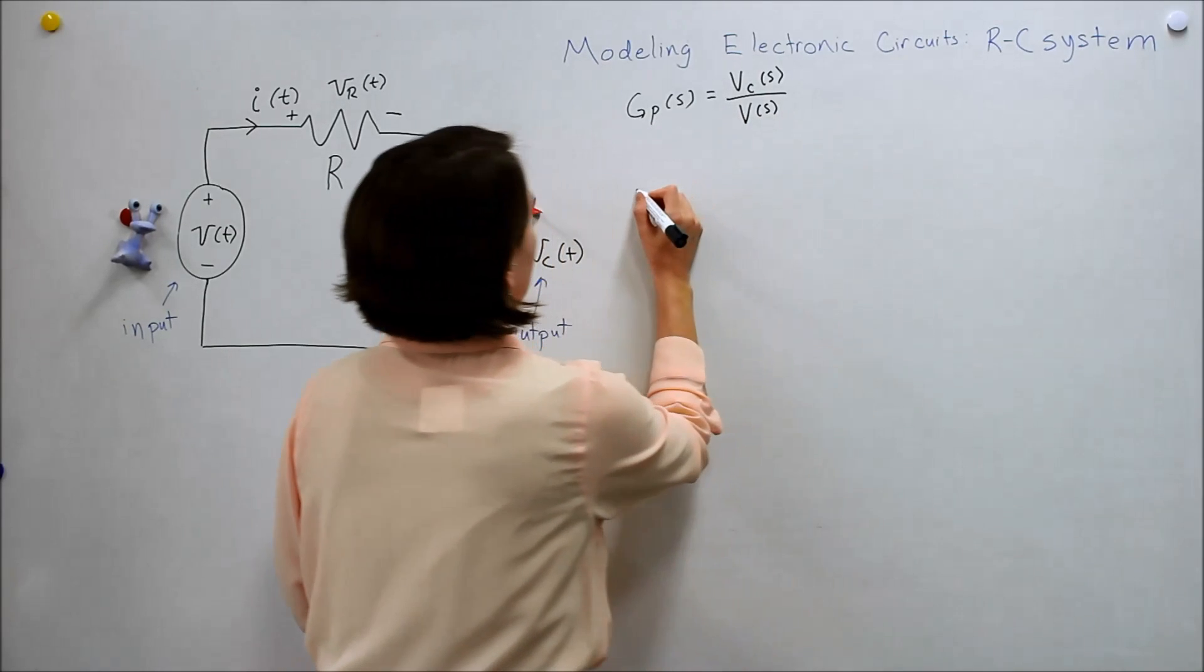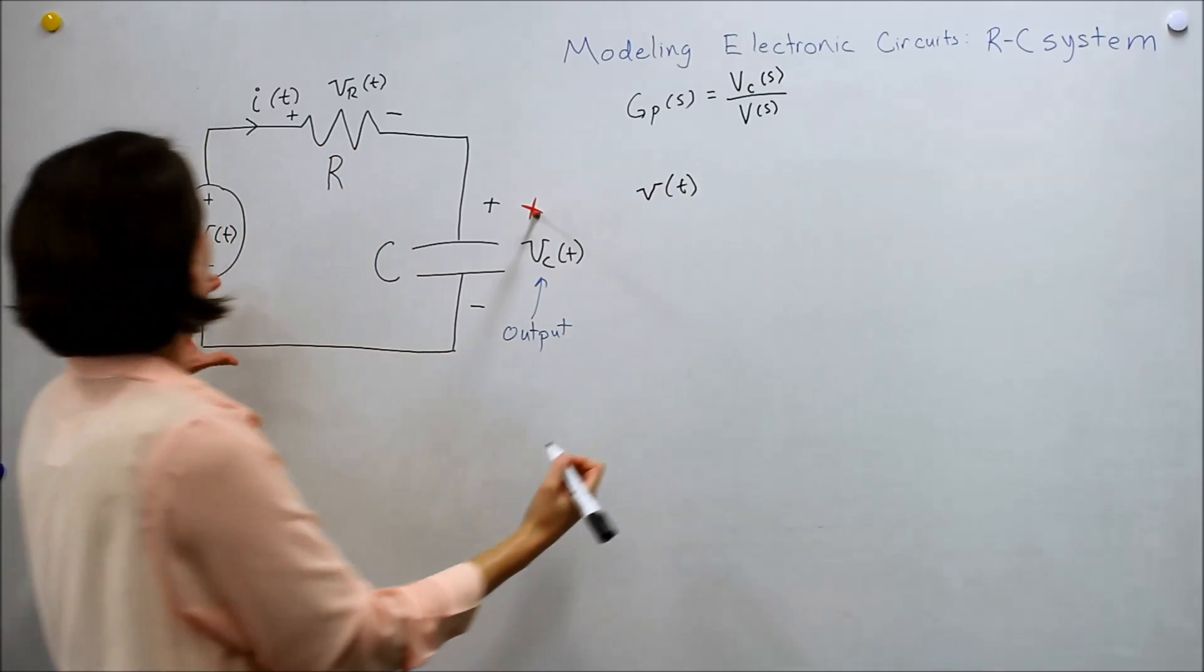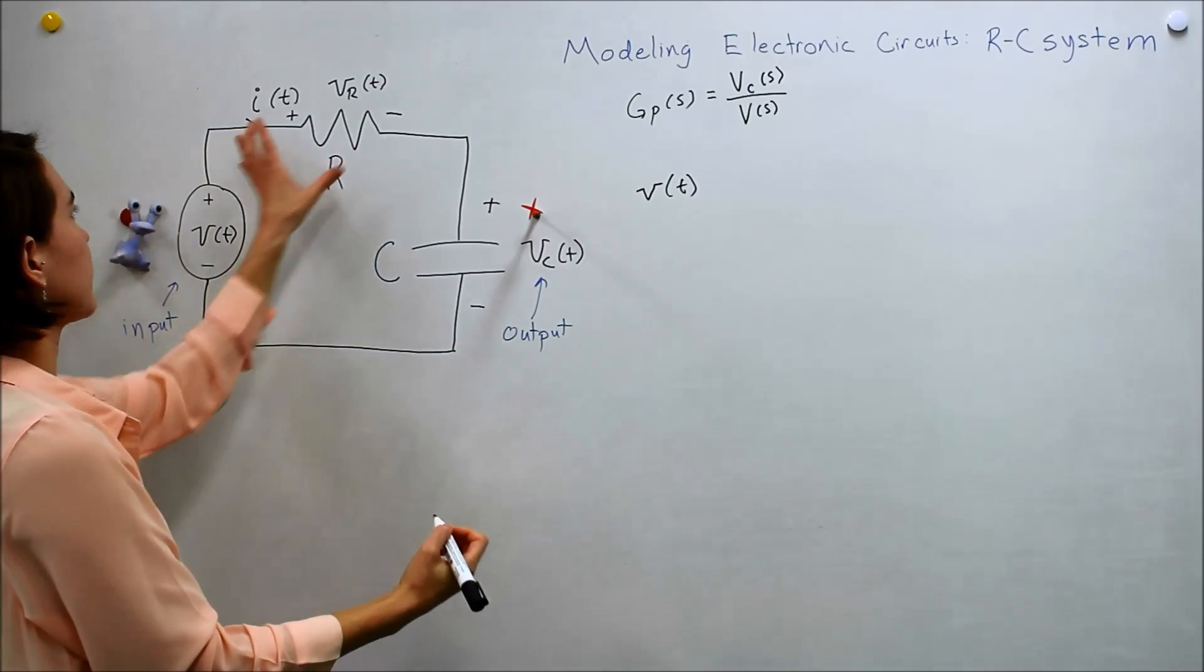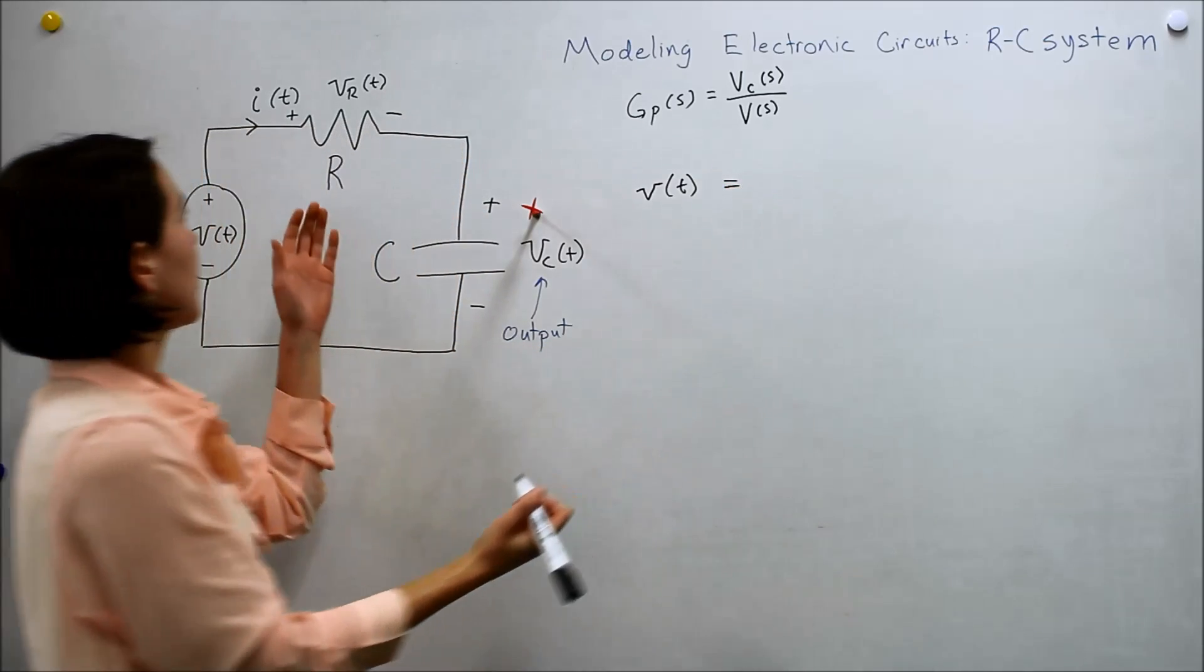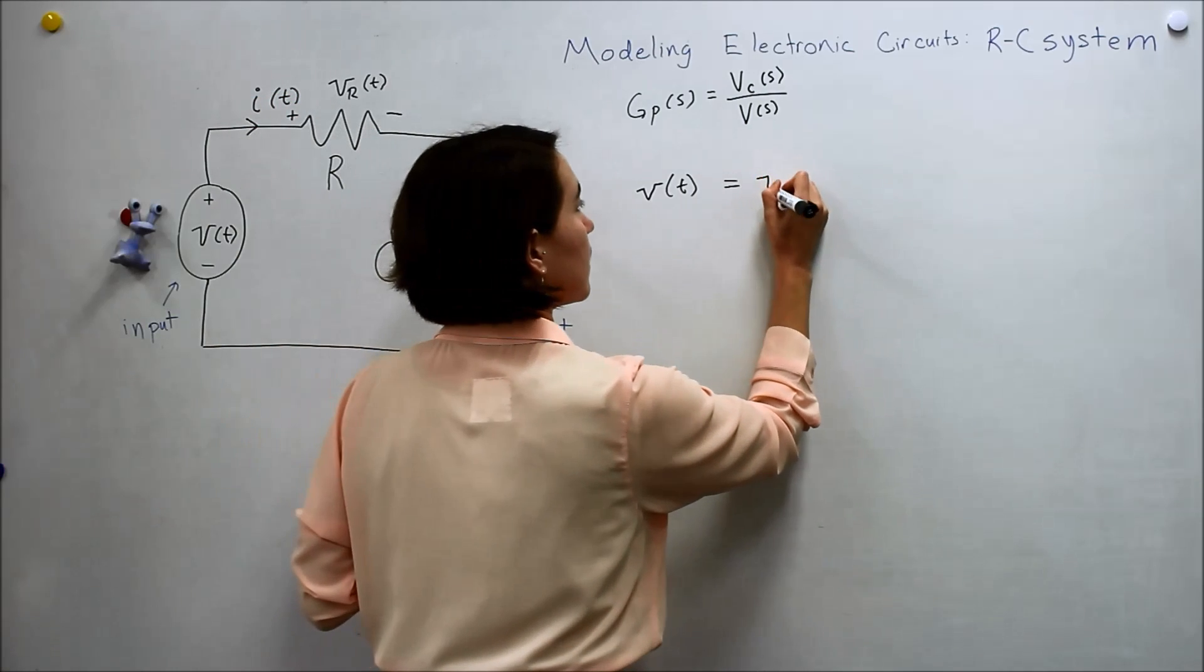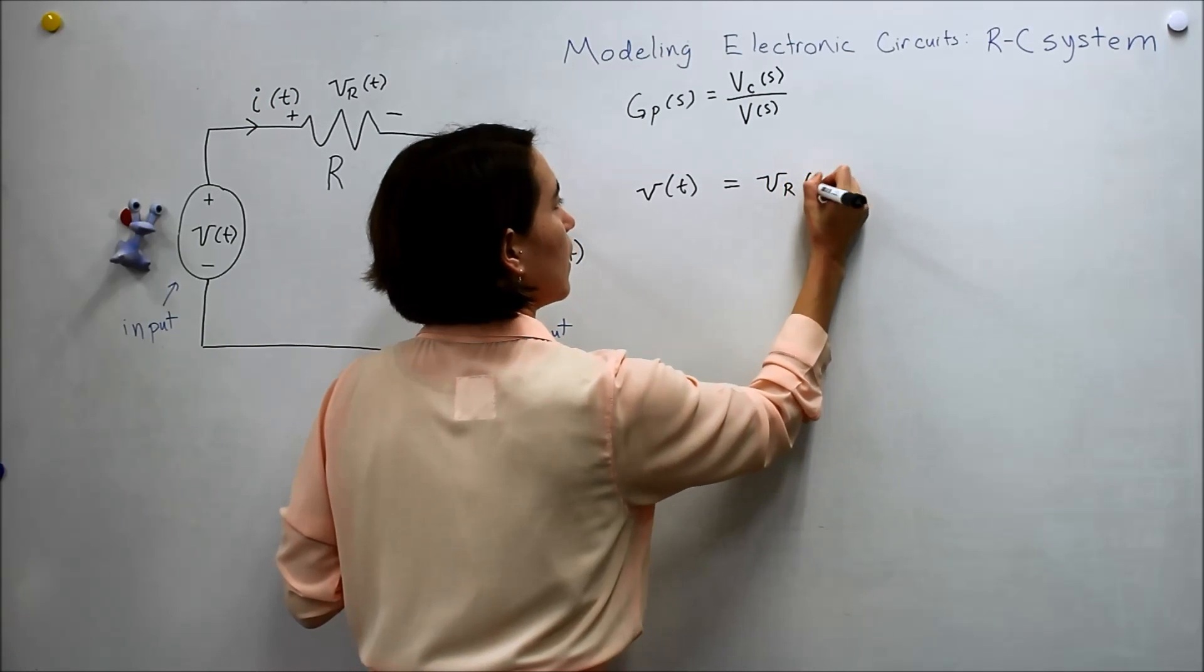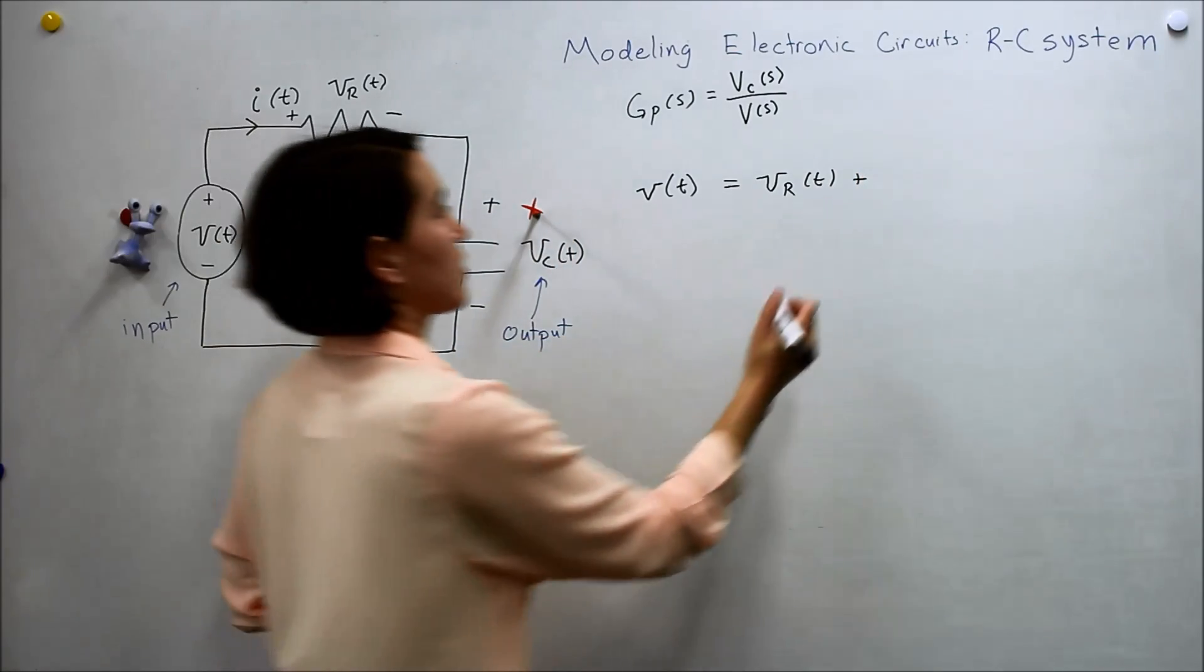We start with voltage. This voltage has to equal the sum of this one and this one. So we can write vr, so this v must be equal to this vr of t, plus this voltage, the capacitor voltage.